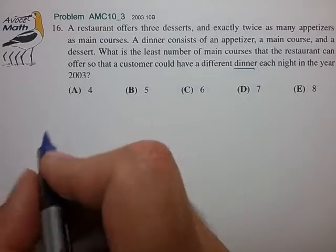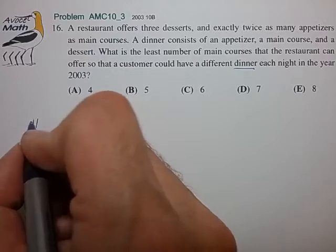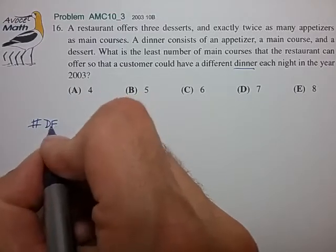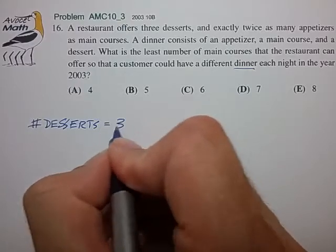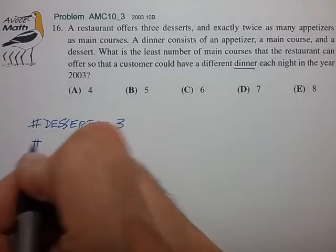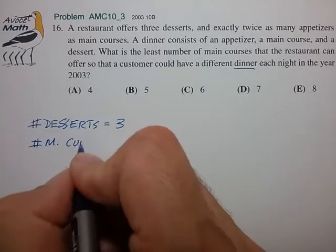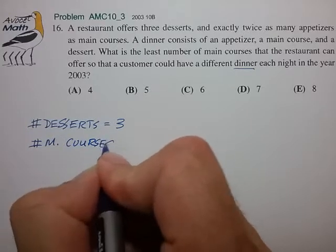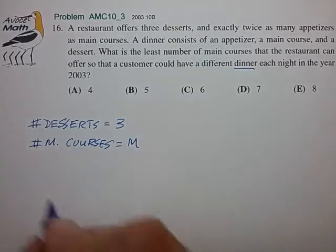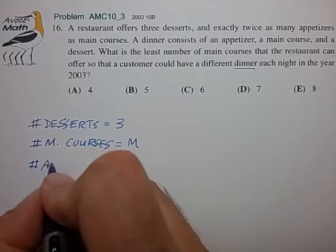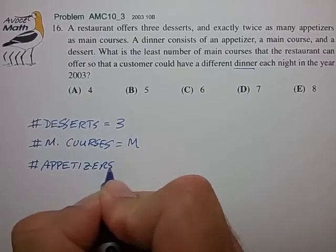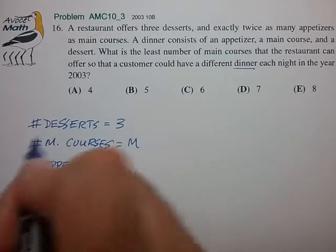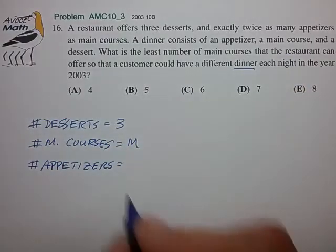So let's define a few terms. We have the number of desserts equal to three. We have the number of main courses to be determined so we'll just call that M for now, and we have the number of appetizers equal to twice the number of main courses by the statement of the problem.